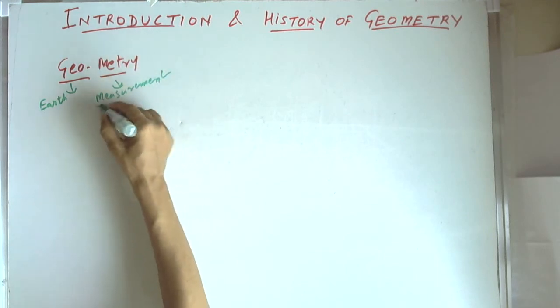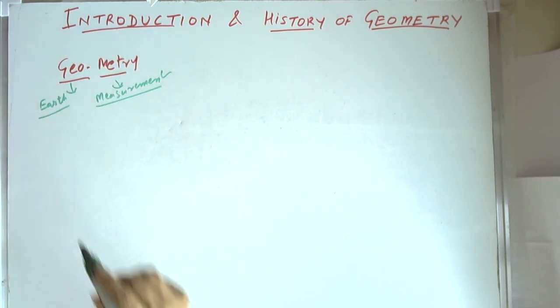This is earth measurement and the first use of geometry by mankind was for measurement of land, farms for the farmer and also for building canals and waterways for irrigating the farms.